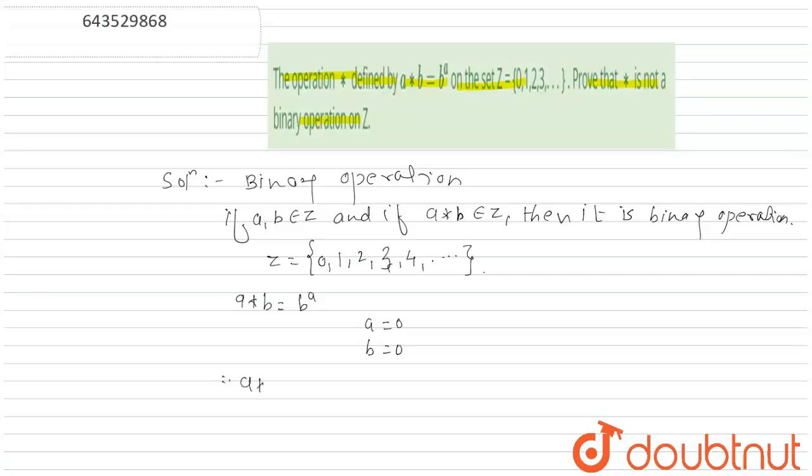Therefore a star b is 0 raised to 0, which is in indeterminate form.